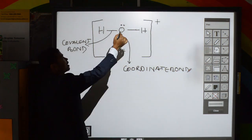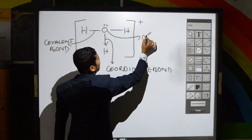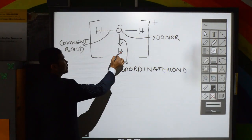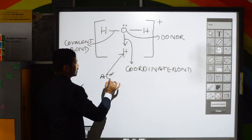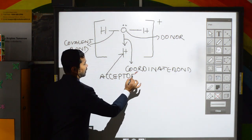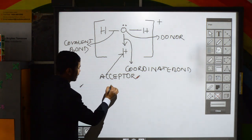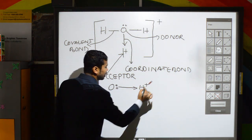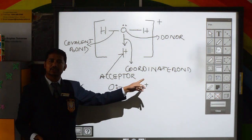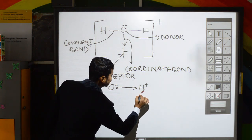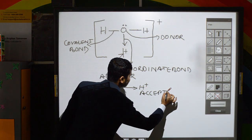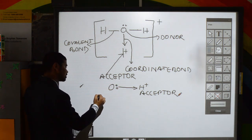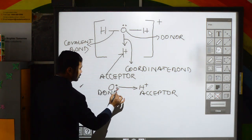In the coordinate bond, oxygen is the donor because it is donating both electrons for the formation of this bond, and hydrogen is the acceptor because hydrogen is simply accepting. Oxygen has a lone pair of electrons which it shares with the hydrogen ion, helping hydrogen complete its duplet. Oxygen is called the donor and hydrogen is called the acceptor.